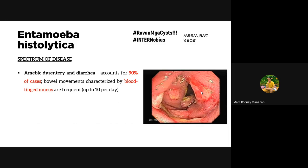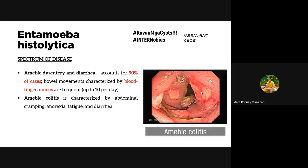Amoebic colitis shows ulcerations on the walls of the intestine caused by trophozoites destroying the cells. Symptoms include abdominal cramping, anorexia, fatigue, and diarrhea. If amoebic colitis progresses, it can result in amoeboma — a granulomatous lesion or growth from the ulcer that protrudes from the intestinal wall and resembles a tumor. It can be misdiagnosed as colon cancer or a malignant tumor.